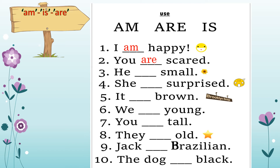Number three: He dash small. We have just learned that with he, she, it — all the singular nouns or pronouns — we use is. He is small. She is surprised. It is brown. Number six: We dash young — We are young. You dash tall — You are tall. They dash old — we have learned that with plural nouns or pronouns we use are. They are old.